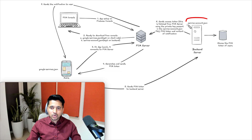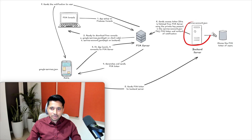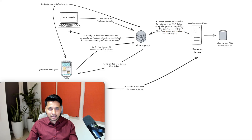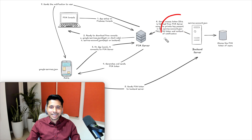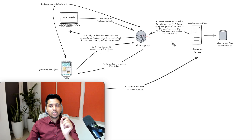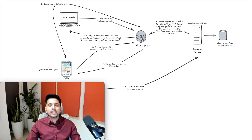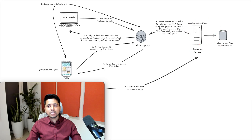The backend developer will write code to use the service-account.json file to connect to the FCM server and obtain the access token. This access token has an expiry, so it only needs to be regenerated when it expires. The backend server will then send three things to the FCM server: the access token, the FCM token, and the content of the notification.